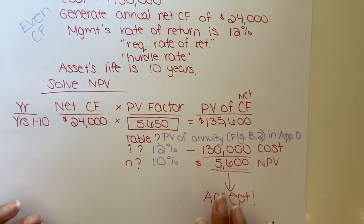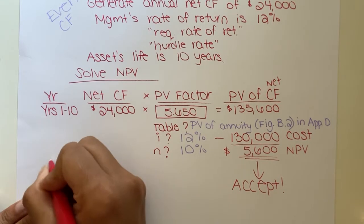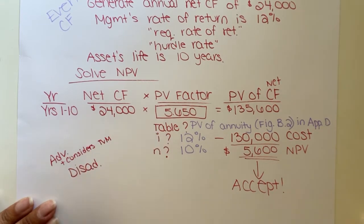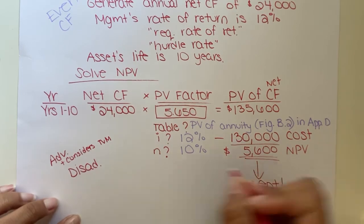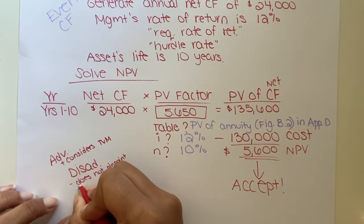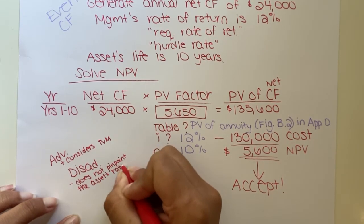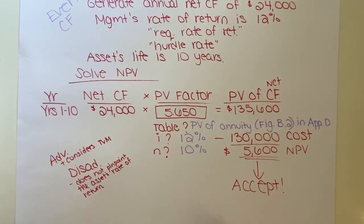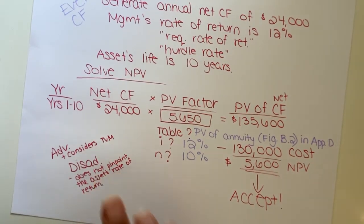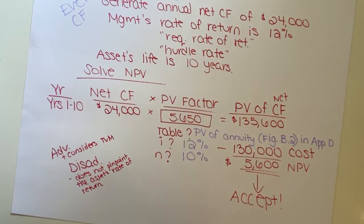The limitation with the NPV method, if we wanted to talk about a disadvantage: obviously an advantage is it considers time value of money — that's a big advantage. A disadvantage is it does not pinpoint the asset's actual rate of return. I can tell you it exceeds management's 12% required rate of return, but does that mean it's 12.5%, 13%, or 20%? I can't really tell you that. That limitation is addressed in the fourth capital asset formula — the internal rate of return. We'll see that in the next video.